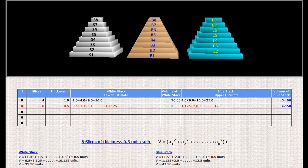Imagine now dividing the pyramid into 8 slices of thickness 0.5 units each. The volume of the slice B8 lies between the volume of S8, which is 0.5 cubic units, and the volume of L8, which is 1.125 cubic units.